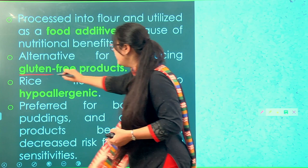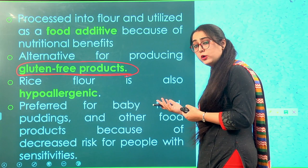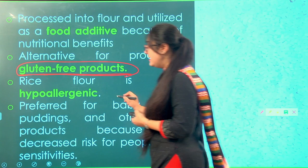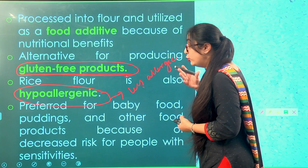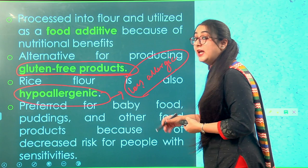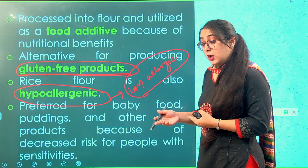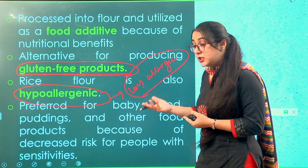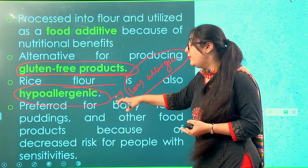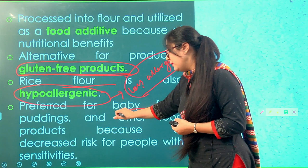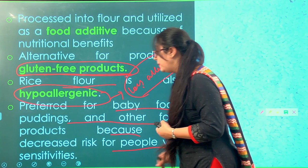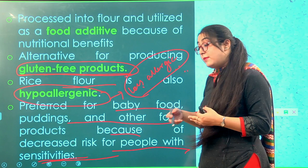Rice flour can be used as a food additive because of its nutritional benefits — it is rich in protein and fiber. It is hypoallergenic, meaning it produces very few allergic reactions compared to products like peanuts or soybeans. For people who are extremely sensitive and prone to allergies, rice flour is a very good option. For this reason, it is used for producing baby foods, as the decreased risk of allergies makes it ideal for young children.